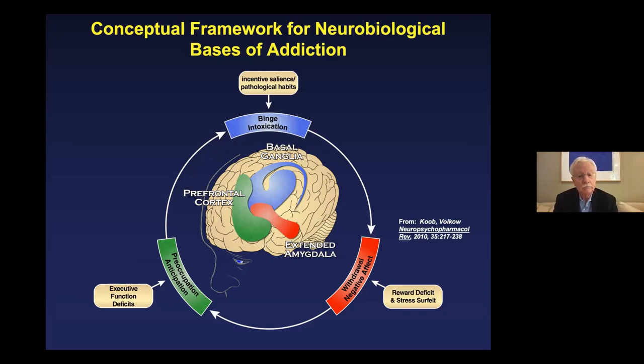The second stage is the withdrawal negative affect stage, based on a simple idea: what goes up must come down. Once you've overdone alcohol, there's usually an after effect — most of us know it as a hangover. But when you become addicted to alcohol, reaching moderate to severe alcohol use disorder, that withdrawal negative affect grows into much more than a hangover. It becomes physical signs of withdrawal as well as emotional signs — basically, you feel terrible. It can also be life threatening due to hyperthermia, which could kill you if untreated. So it's a very serious stage.